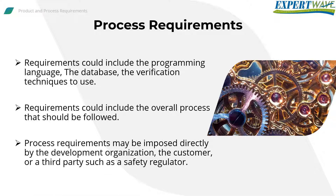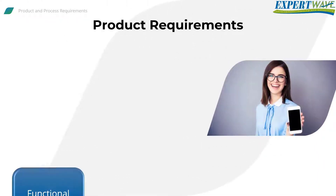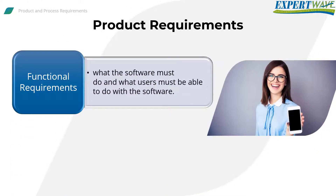Process Requirements may be imposed directly by the development organization, the customer, or a third party such as a safety regulator. On the other hand, product requirements will dictate what the software must do and what users must be able to do with the software. These are called functional requirements.